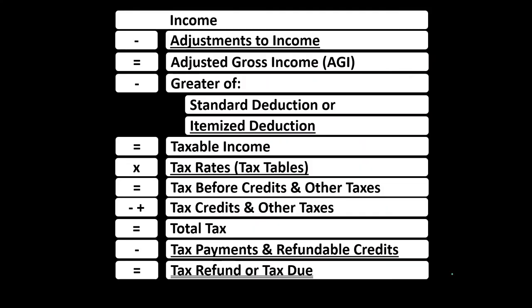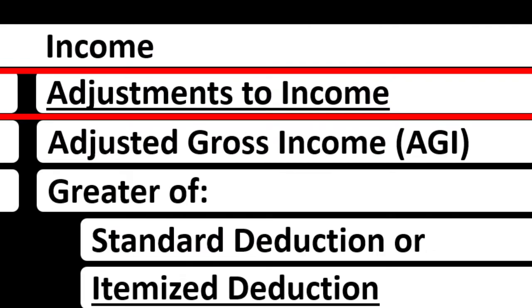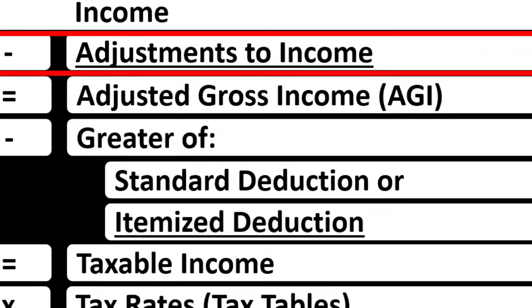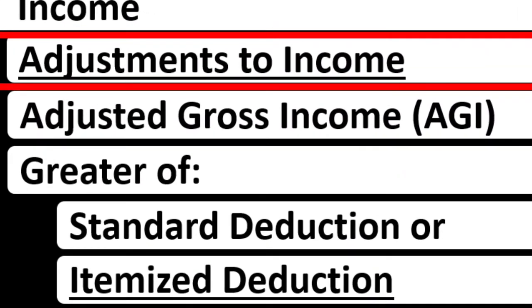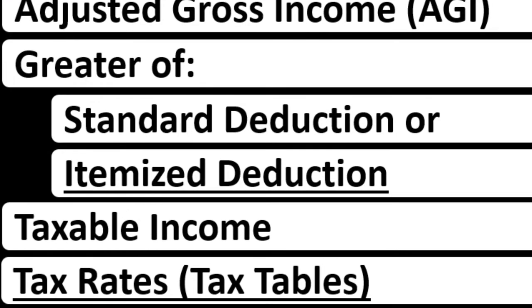Here's the income tax formula. We're looking at the adjustments to income, which you might hear called the above-the-line deductions, the Schedule 1 deductions, the deductions for adjusted gross income — keeping them distinct in our mind from the other deductions, which are the standard and itemized deductions, for example.